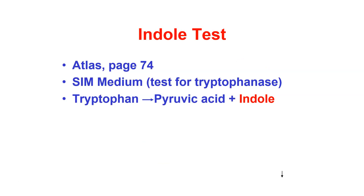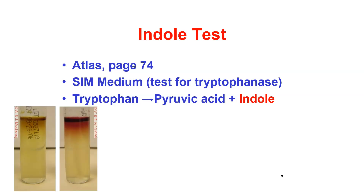The indole test is done on SIMS media. The indole test tests for tryptophanase. There is tryptophan in the medium; if tryptophanase is present, it will break down into pyruvic acid plus indole. The indole then reacts with the reagent we add, developing a color. Looking at two tubes with reagent added: the one on the left has a slight beige color change, whereas the other has developed a very distinctive red color. The cherry red color is an indicator for the presence of indole, so that result is indole positive.